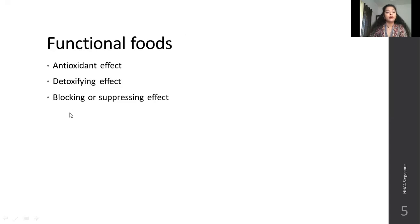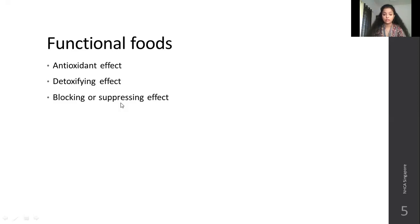Certain foods have a blocking or suppressing effect. They suppress the negative effects of toxins and prevent clinical disorders such as cancer. Garlic, for example, contains allylic sulfides — small nutrient components that are potent anti-mutagenic and anti-carcinogenic agents. Studies have shown these allylic sulfides can suppress DNA mutations and cancer-causing factors. This is an example of how food can act as a blocking and suppressing agent to prevent certain diseases.